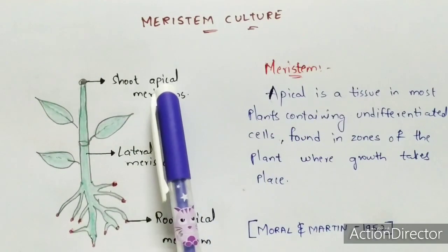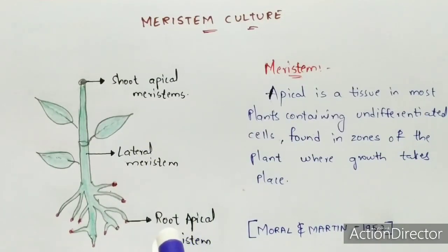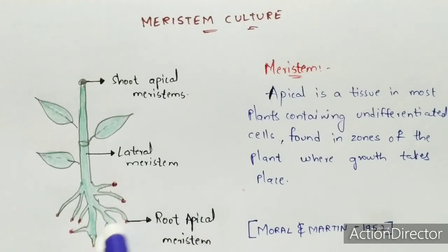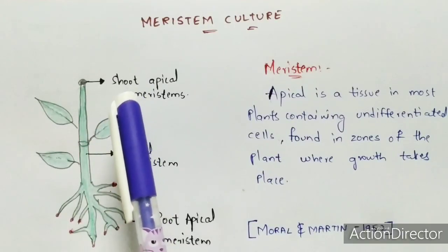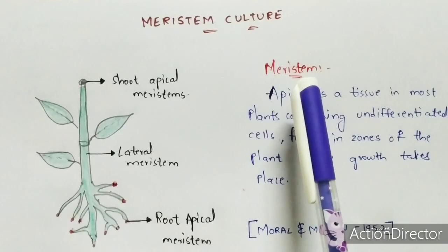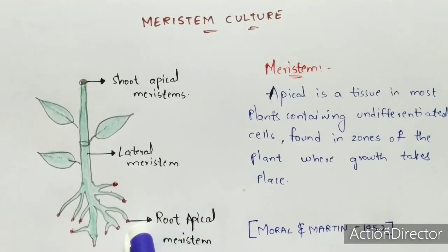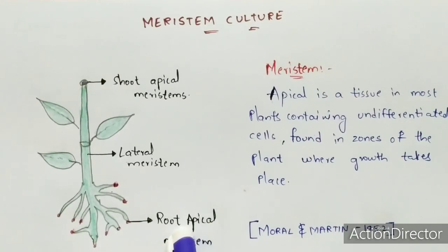The apical meristem will be of two types because they are present at the root region and also at the shoot region. The root system is present below the soil, and the shoot system — which includes the stem, branches, leaves, flowers, and fruits — is present above the soil. So the root apical meristem and shoot apical meristem are the two types of apical meristems, present at the regions where growth takes place.